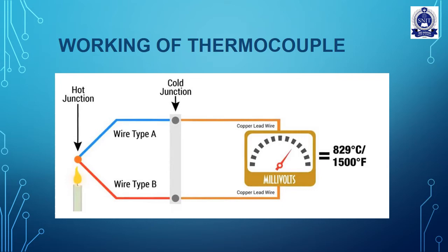At the two junctions P and Q, two dissimilar metals — Type A and Type B — are connected. When we connect the hot junction to the object whose temperature needs to be measured, the temperature at the hot junction is recorded.